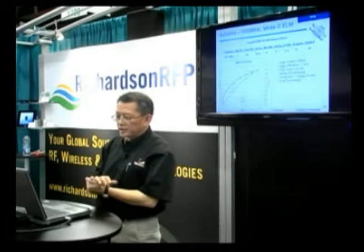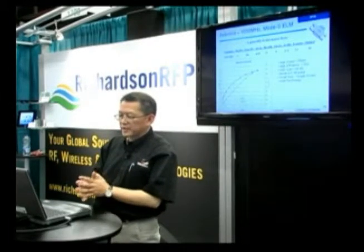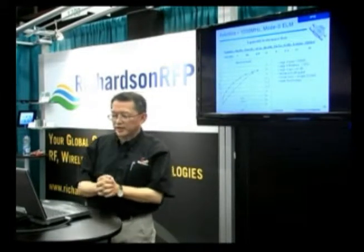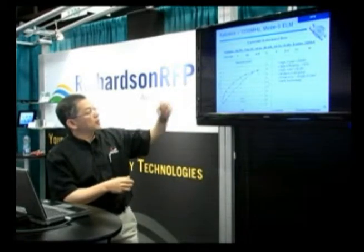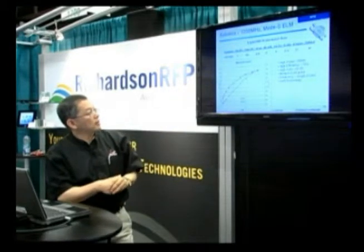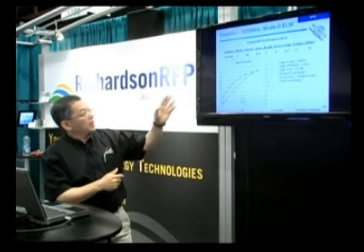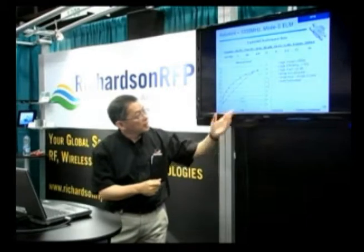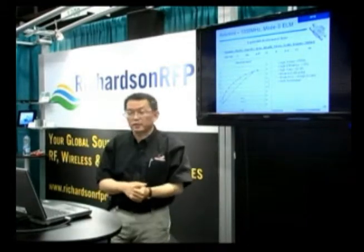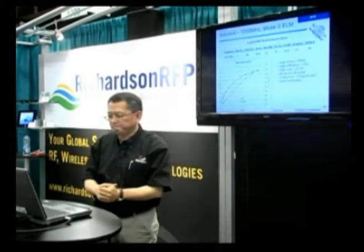Typical test data for this GaN device: with 5 watts in, you get 730 watts out, excellent return loss, great efficiency, and very high gain — 20 dB.